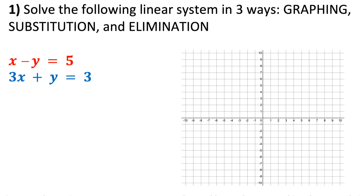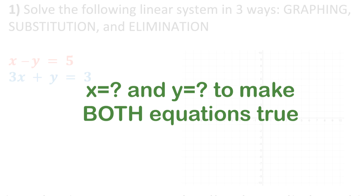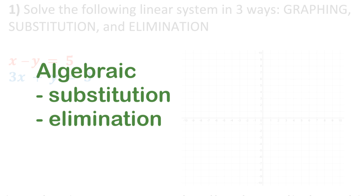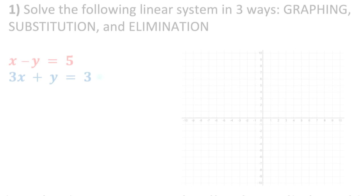Example 1: solve the following linear system in three ways — by graphing, substitution, and elimination. With all three methods, we should get the same answer. When solving a linear system, we have two linear equations and we want to figure out the values of the variables that make both equations true. We can do that algebraically with substitution or elimination, or graphically by graphing both lines and seeing where the point of intersection is. Let's do graphing first.